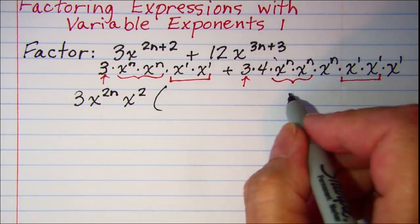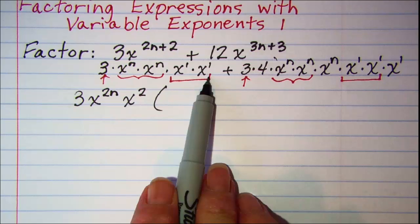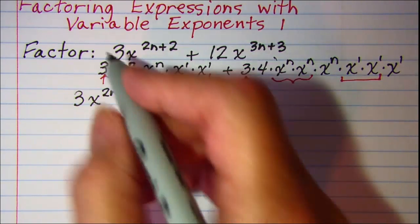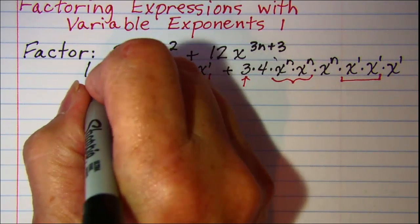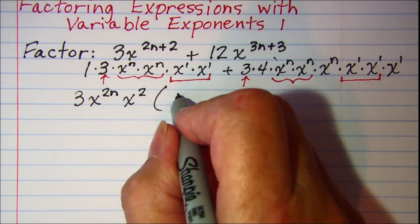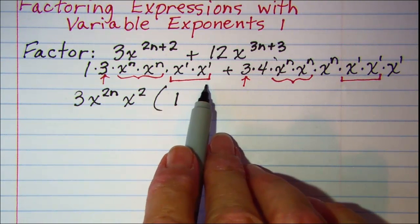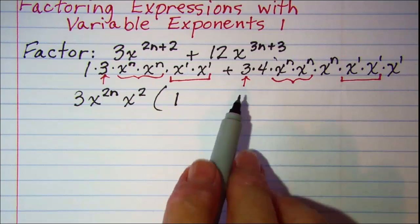Now we need to write what's left. It looks like I took all of the factors out of this term. Remember you need to put a 1 because this is the same as 1 times 3. You need to put a 1 in there to make sure that that term stays there or else you're going to get a monomial inside the parentheses.